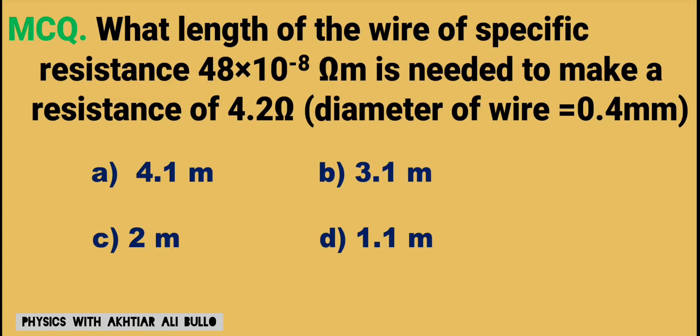What length of wire with specific resistance 48 × 10⁻⁸ ohm·meter is needed to make a resistance of 4.2 ohm, given the diameter of the wire is 0.4 millimeters? The options are: a) 4.1 meters, b) 3.1 meters, c) 2 meters, d) 1.1 meters.